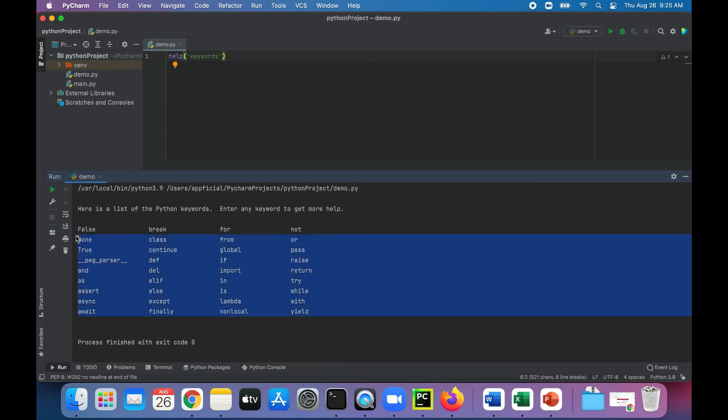In the console you get an output list of the Python keywords. Just to show you that they can't be used as identifiers, you can create an identifier like age equals 25, but we cannot create an identifier that's one of these keywords, such as, let's pick a random one, break equals 25.